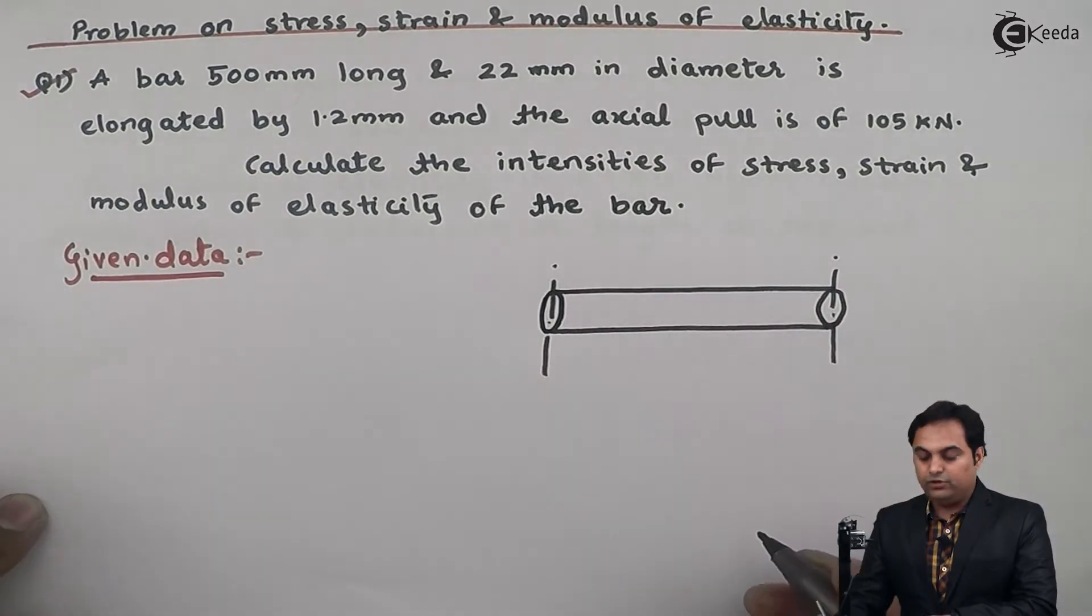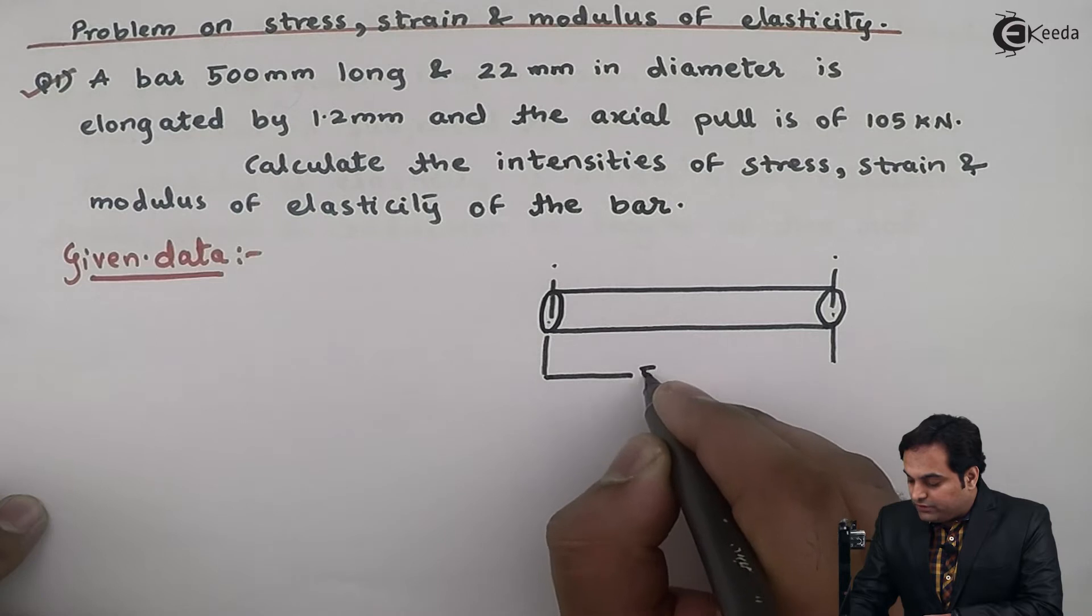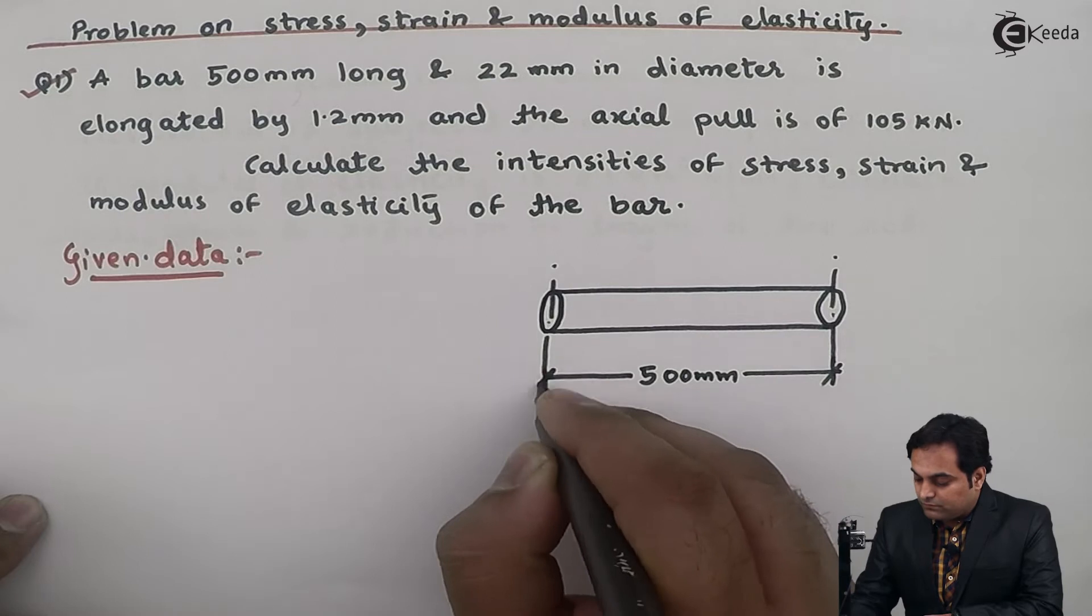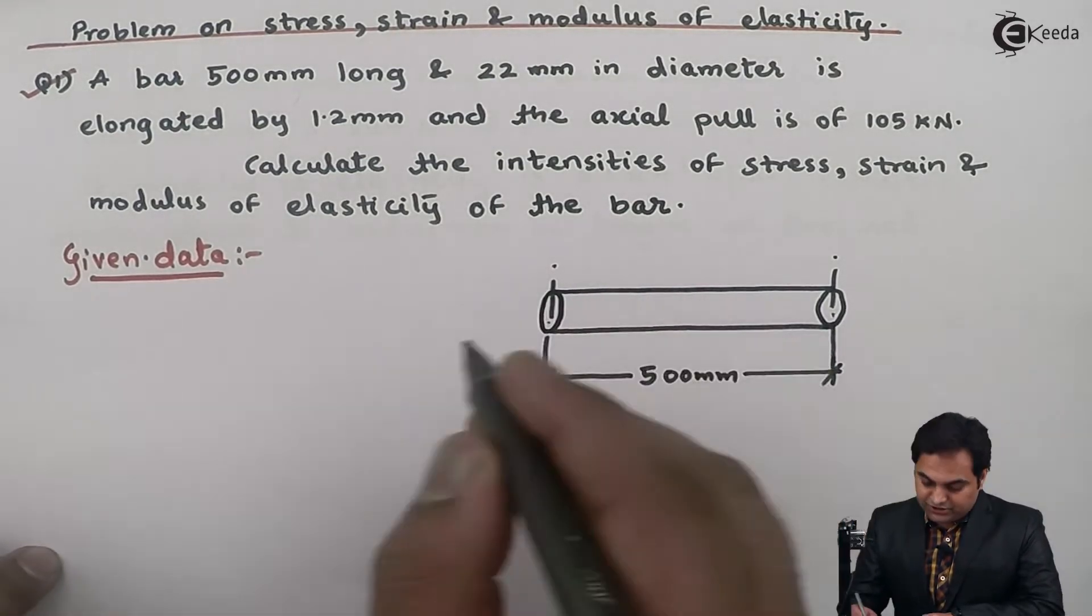Here I have drawn a bar or rod whose length is 500 mm and diameter is, if I look at this cross section, 22 mm.